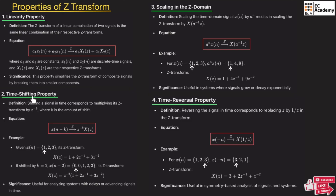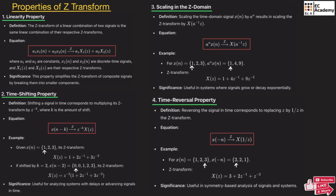The next property is the time shift property. This property states that if we have a time shift at the input signal and take the Z-transform, we can write it as z to the power of minus k multiplied with X(z). Whatever time shift we have, the same value is taken as the power of z and multiplied with the Z-transform. For example, if we have x(n+k), we get z to the power of k times X(z); for x(n-k), we get z to the power of minus k times X(z).